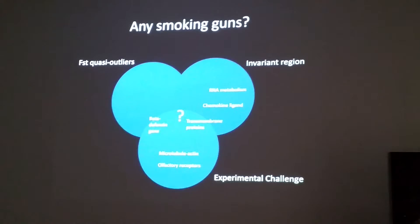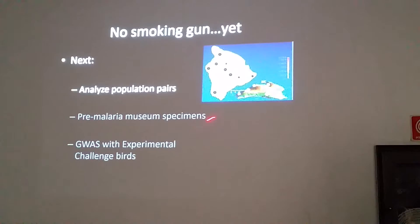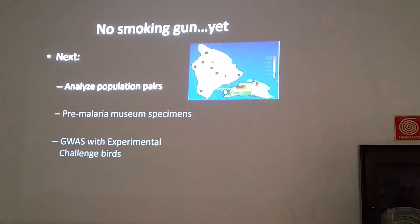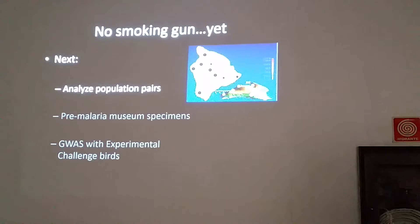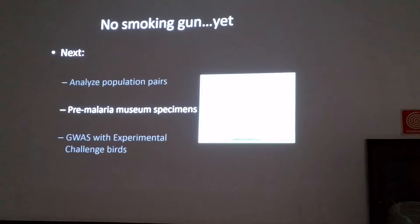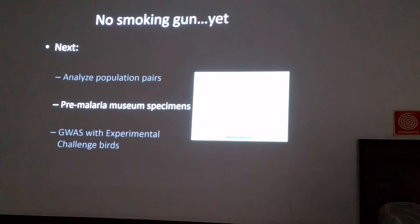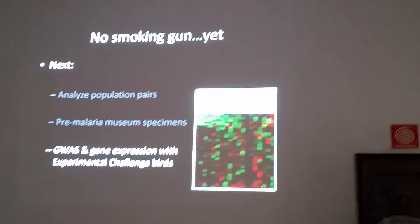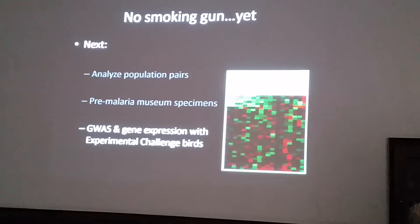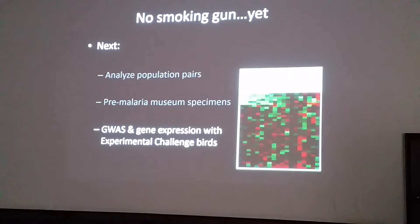I want to acknowledge this is very much a work in progress. I still have to analyze multiple other population pairs. One interesting thing we can do is use the genome-wide association approach to look for loci associated with actual infection data from one transect in the wild. We're also really excited about comparing the genomes of Amakihi before and after the introduction of avian malaria using museum specimens — and our capture approach works really well for museum specimens. Finally, we're about to start a broader experimental challenge experiment comparing genomes of birds that survive and die, while also monitoring gene expression between the two groups over the course of the infection.